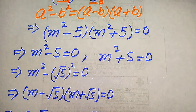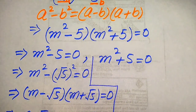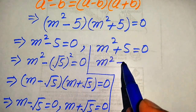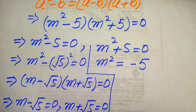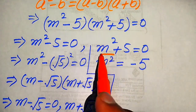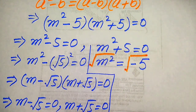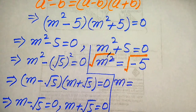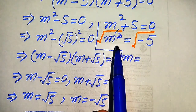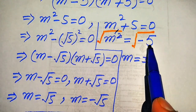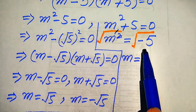Now we go back and solve the second case: m square plus 5 equals 0. We move 5 to the right hand side, giving m square equals minus 5. We apply the square root on both sides. The exponent 2 and the square root cancel, and we write plus or minus on one side, separating the square root sign over the negative term and 5.